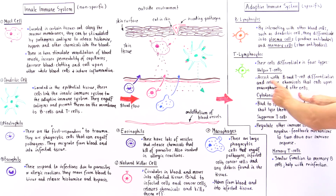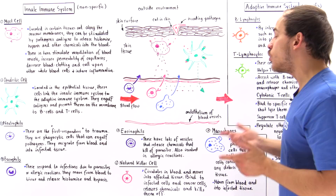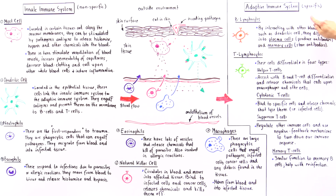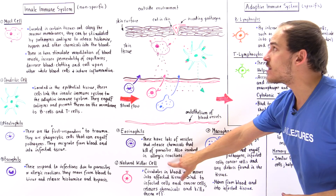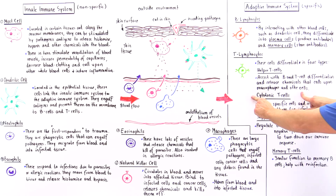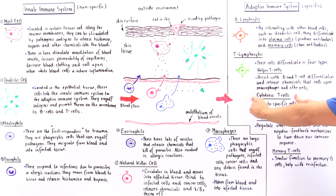Cytotoxic T cells are similar to natural killer cells because they attack infected cells — cells infected by a viral agent — or cancer cells. But there is an important difference: cytotoxic T cells are specific, meaning they will only bind to a specific antigen. Natural killer cells are non-specific and will bind regardless of the antigen type. Cytotoxic T cells only bind to the specific antigen that was brought to them by the dendritic cell.